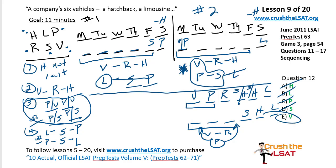A really good sequencing game lesson. The goal is 11 minutes — there are seven questions, more than the usual five or six in a sequencing game, and rule three, the PV/PS rule, is a bit different to figure out than rules we've seen before. Not a hard game, but a time-consuming one. If you found the lesson helpful, click the thumbs up button, subscribe, and share it with your friends.